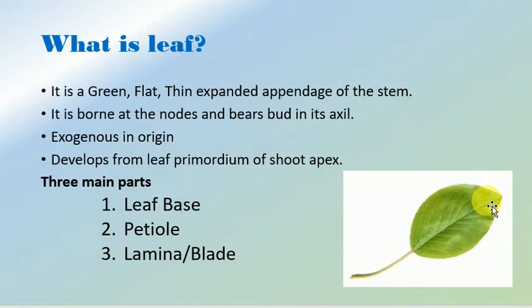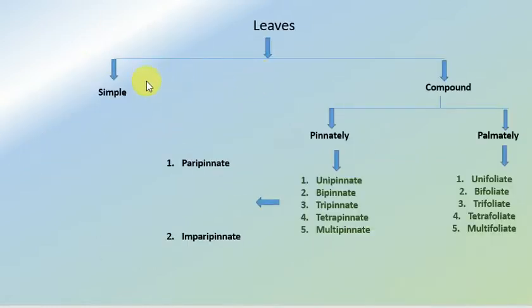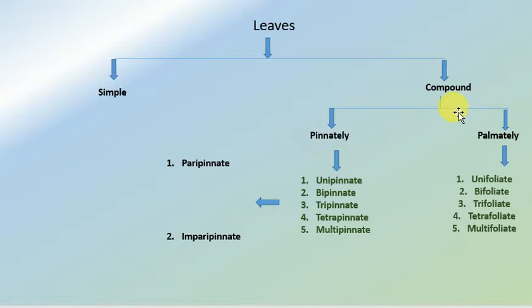On the basis of the blade characteristics, leaves are divided into two major types. If the leaf blade is undivided and is a single unit, those leaves are known as simple leaves. If the lamina gets divided into many small multiple subunits, that kind of leaf is known as a compound leaf. The compound leaf is further divided into two main categories — the pinnately compound leaf and the palmately compound leaf — based on its arrangement.